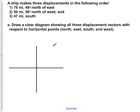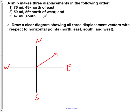Draw a clear diagram showing all three displacement vectors with respect to the horizontal points — north, east, south, and west. So if we draw our first vector here in red, we're going to label in north, east, west, and south so that when we go through our directions, we can do it more easily.